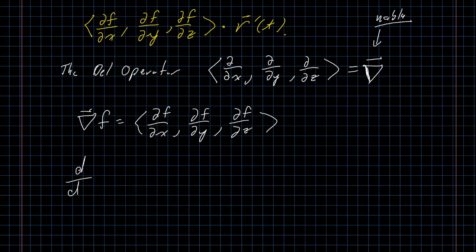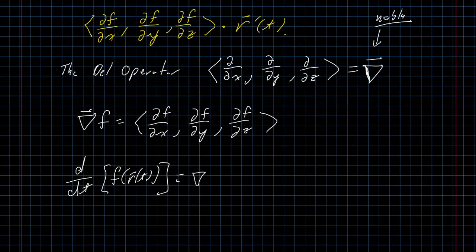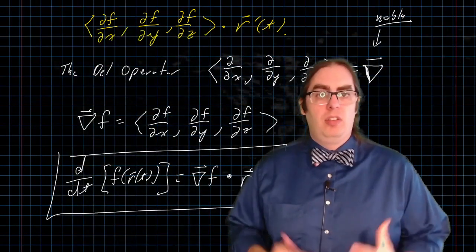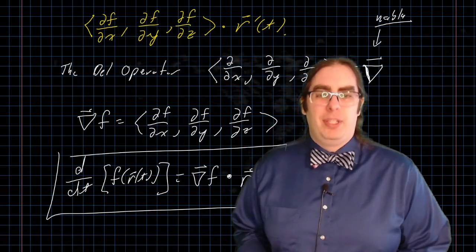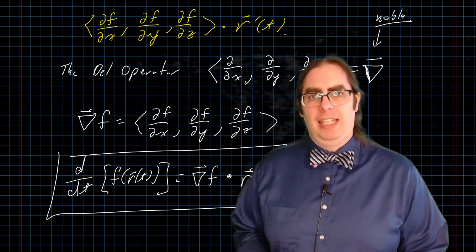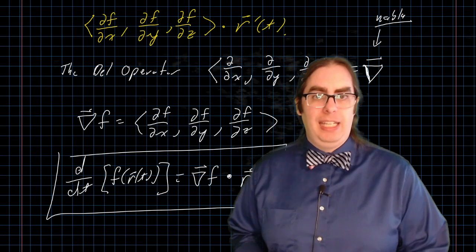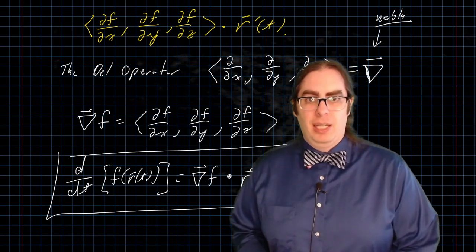And so I can say that the derivative with respect to time of f of r of t can now be written in the shorthand of del f dot r prime. All right, so that's the value of the gradient. That's why this is an operator that we care about. This is why this is a thing that we're going to be analyzing. But as mathematicians are wont to do, now that we have a thing, we should study it. We should look into it, see if there are any interesting properties that come out of it. And there are.